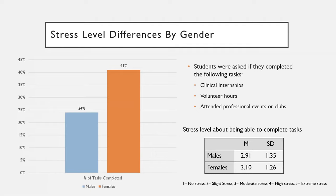Students were also asked if they completed clinical internships, volunteer hours, and attended professional events or clubs. If they had not completed one of these tasks, they were asked to rate their stress level about being able to do so before they graduate. Interestingly, even though males reported a lower percentage of tasks completed at 24%, they also reported lower levels of stress than females, who reported almost double the percentage of tasks completed.